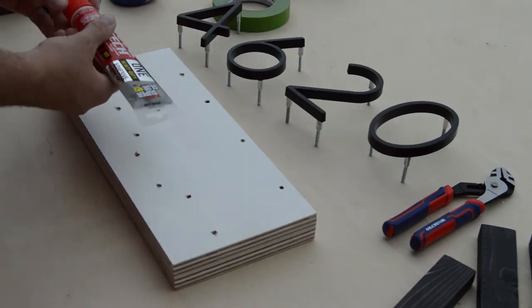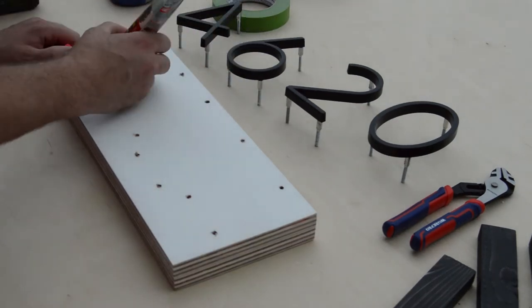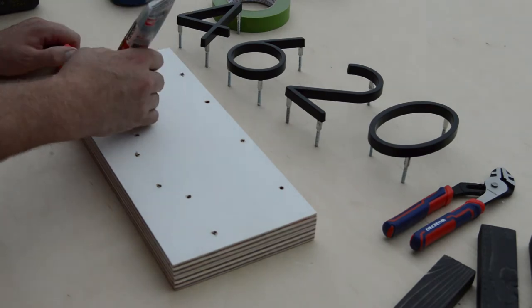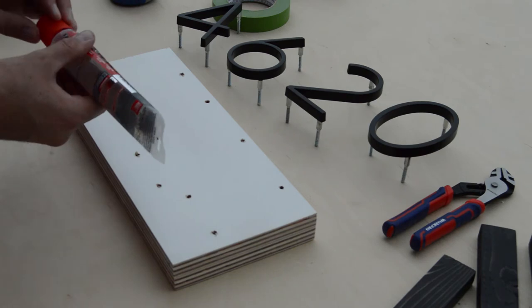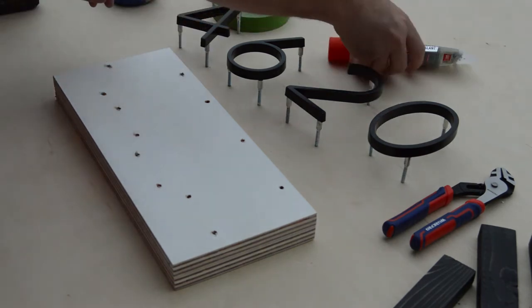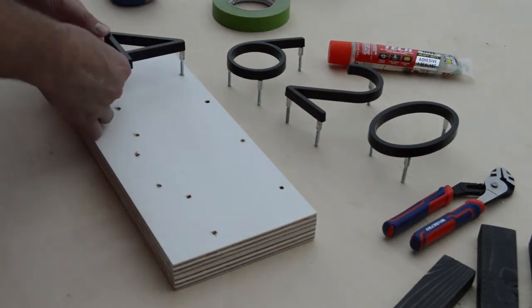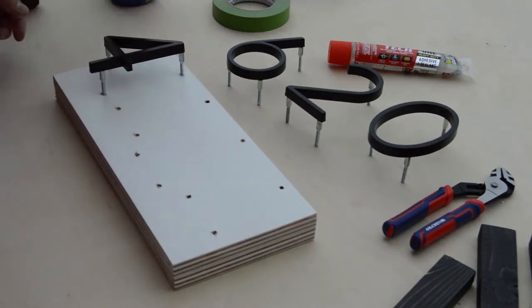After getting all the holes drilled, this is when the total tech comes back into play. I would carefully pour total tech into each hole and then we would lightly tap down each number. And then after I had the number installed, I would use some painter's tape to make sure everything stays put to allow it to dry.